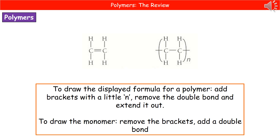If they ask you to draw the displayed formula for a polymer, they will always give you the displayed formula for the monomer first. What you need to do is copy that monomer formula with one exception — you don't put the double bond in. You lose the double bond, extend the arm sticking outwards, then put it in brackets with a little n in the bottom right, which means it's repeating. If they give you the polymer formula and ask you to draw the monomer, take away the brackets, get rid of the little n, take away the arm sticking out the side, and put a double bond in the middle.